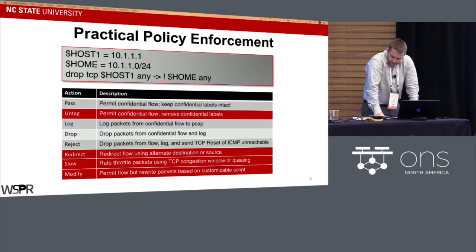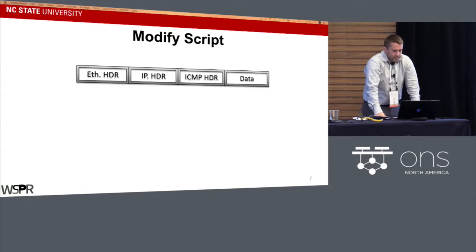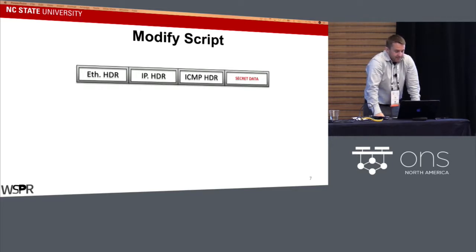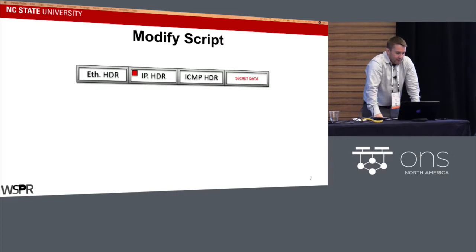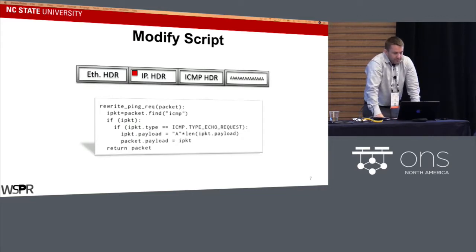Consider a case where an administrator writes a rule with a high false positive rate. The modify action permits the administrator to allow the flow of confidential information but eliminate optional fields that might carry confidential data. For example, with a covert ICMP method where covert data is embedded inside an ICMP echo request — if a user accesses secret data, the packet becomes labeled and arrives at our controller. A simple modify script can rewrite the secret data with all A's, implemented in about seven lines of code.